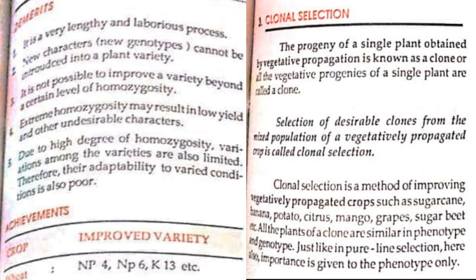Pure line selection is also useful for production of pure lines and inbred lines in cross-pollinated crops. Demerits: it is a very lengthy and laborious process; new characters cannot be introduced into plant variety; it is not possible to improve a variety beyond a certain level of homozygosity; extreme homozygosity may result in low yield and other undesirable characters; variation among varieties is limited, so adaptability to varied conditions is poor. Achievements: wheat — NP4, NP6, K13.